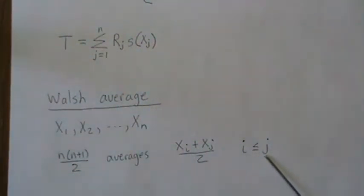You represent that mathematically like this: for all i less than or equal to j. That way we don't get repeat values of one and two and two and one.